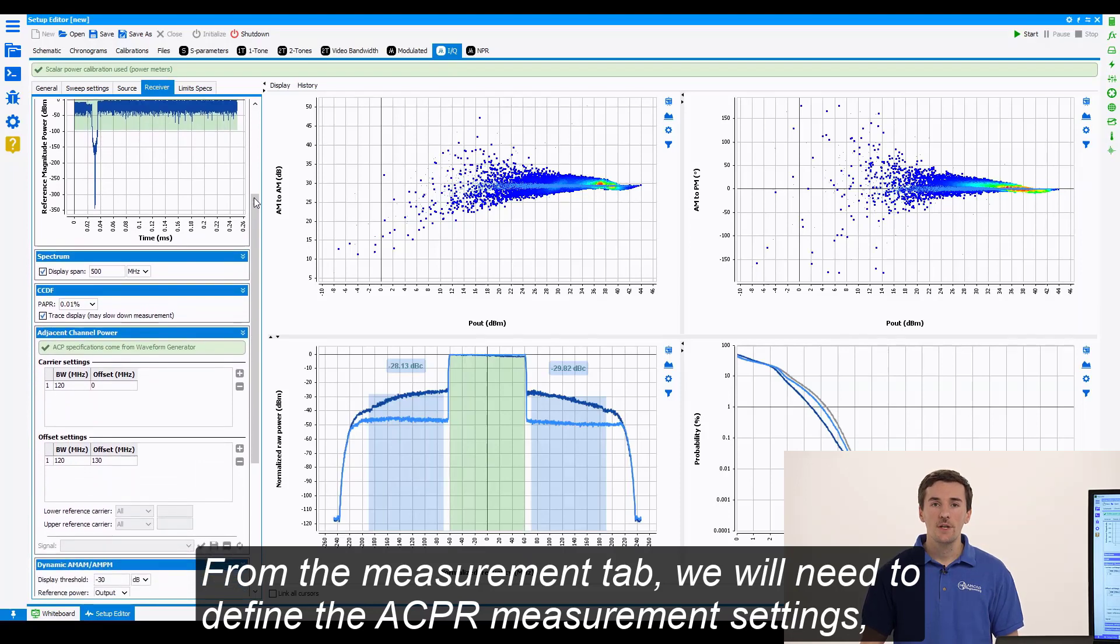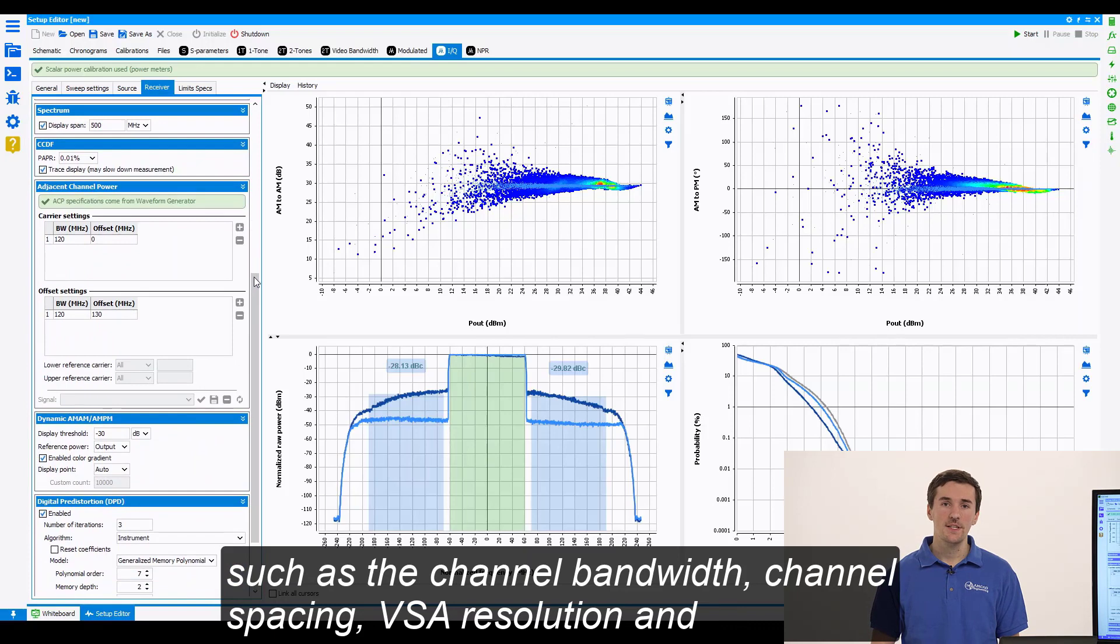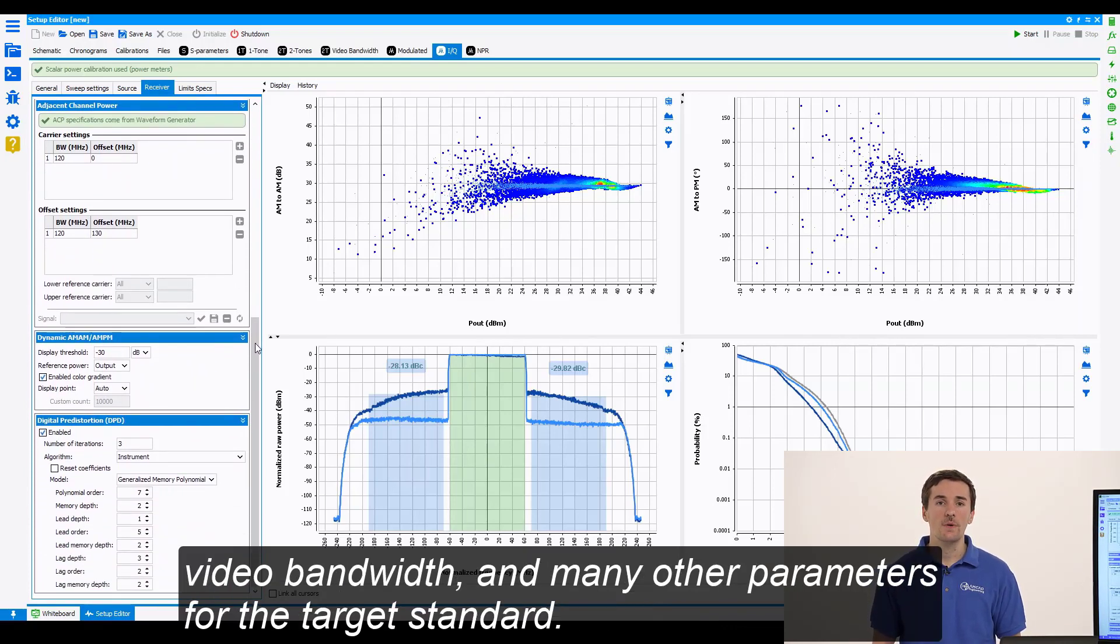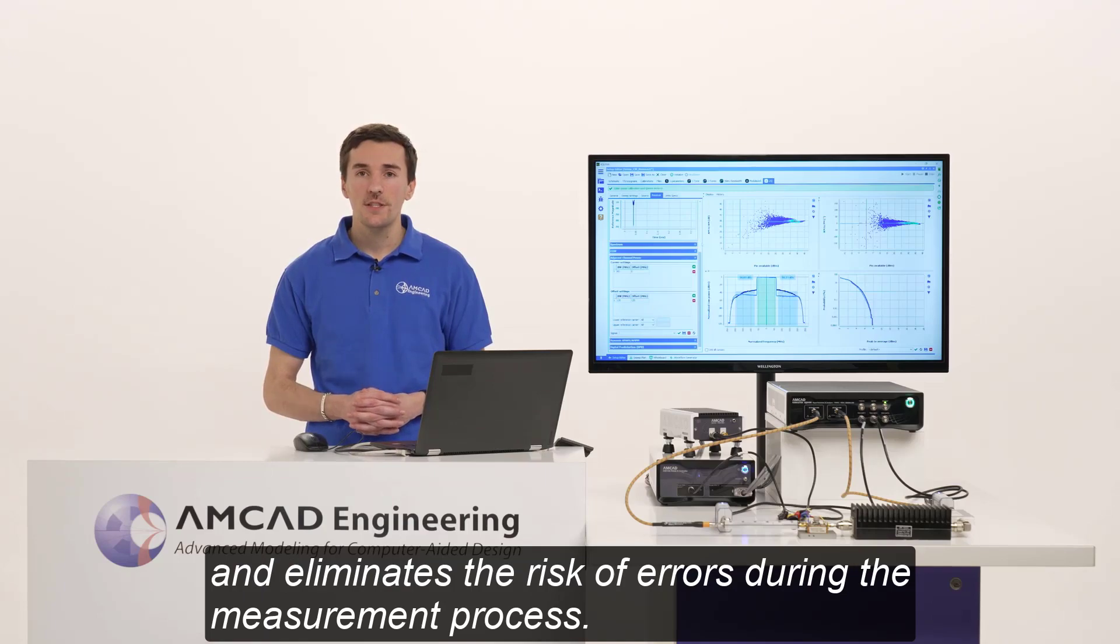From the measurement tab, we will need to define the ACPR measurement settings such as the channel bandwidth, channel spacing, VSA resolution and video bandwidth, and many other parameters for the target standard. This quickly simplifies the test setup configurations and eliminates the risks of errors during the measurement process.